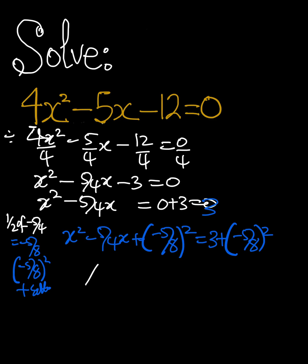When we do that, we always have x. And the number inside here is negative 5 over 8. And then you square that. And then we simplify here.